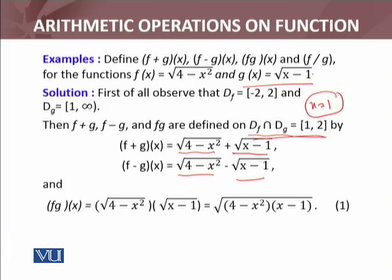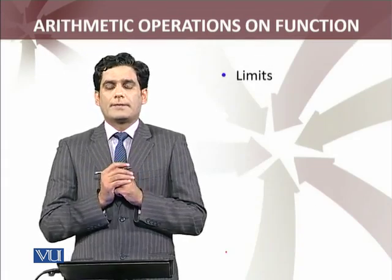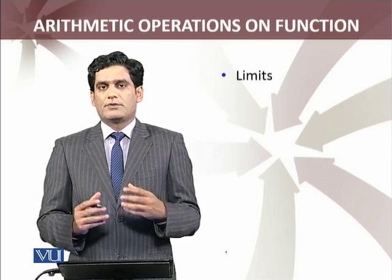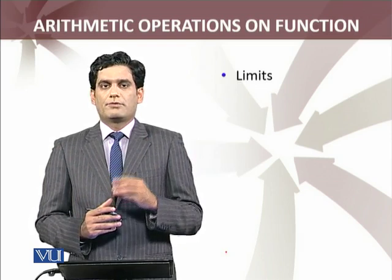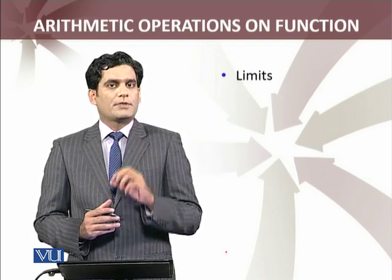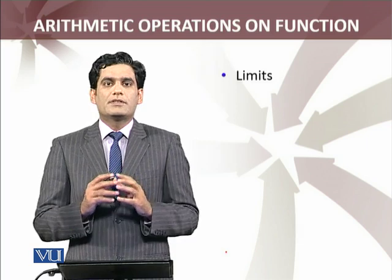Division کے لیے x equals 1 پہ domain سے exclude کرنا ہے کیونکہ g of x equals 0 at x equals 1۔ So f over g is defined on the open interval (1, 2)، کیونکہ open interval میں x equals 1 include نہیں ہے۔ f of x over g of x = √(4 - x²) / √(x - 1) — اس طرح define کی ہے۔ x equals 1 پر something over 0 آتا ہے، so the function is not defined at that point۔